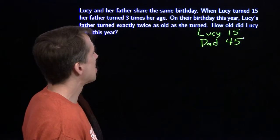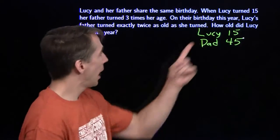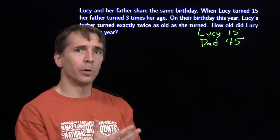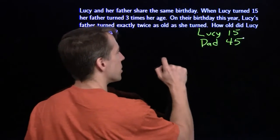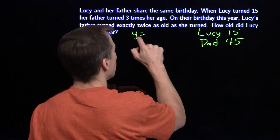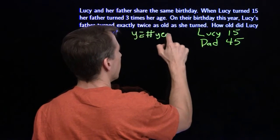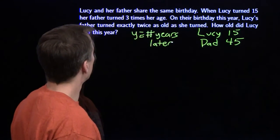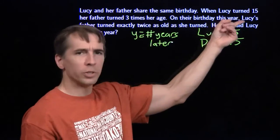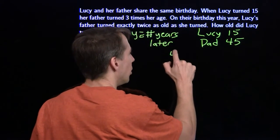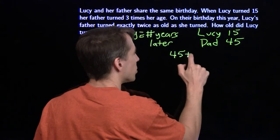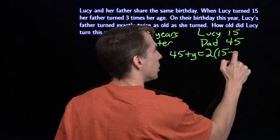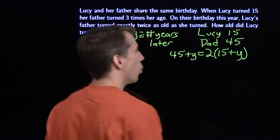I'm going to guess this year is after they were 15 and 45. So let's say Lucy got a bit older. Let's say Lucy got y years older. Y is the number of years later. And father is twice as old as Lucy at that time. So y years later, dad is 45 plus y years old. And that's twice the age of Lucy those y years later.